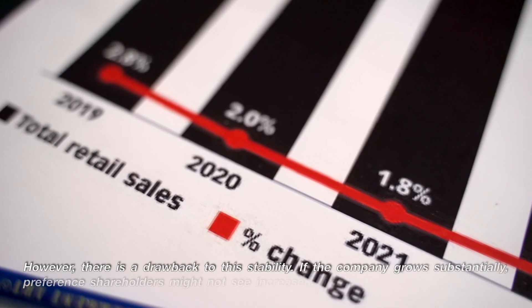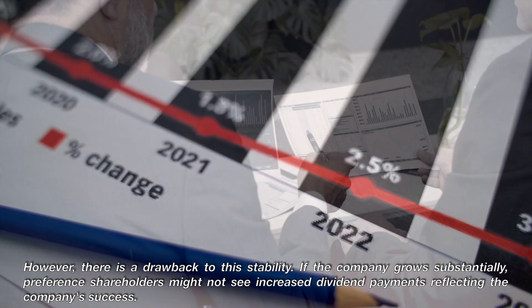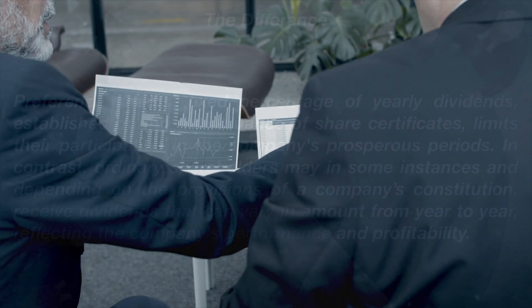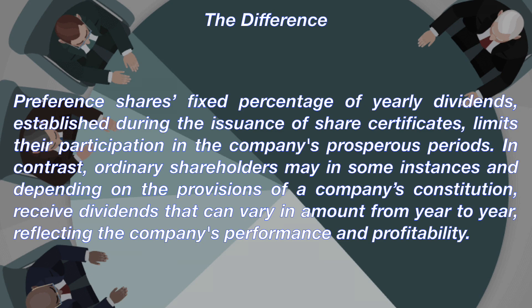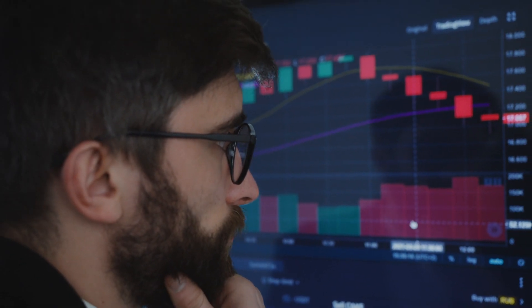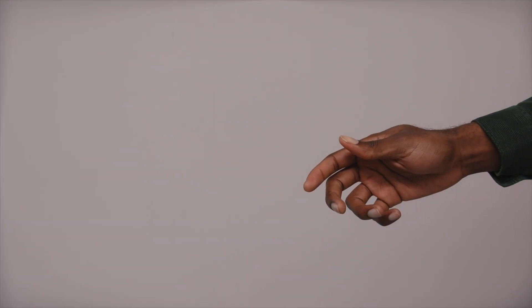Nevertheless, there is a downside to this stability. If a business experiences significant growth, preference shareholders may not benefit from increased dividend payments proportionate to the company's success. Their fixed percentage of yearly dividends, established during the issuance of share certificates or as stated in a company's constitution, limits their participation in the company's prosperous periods. In contrast, ordinary shareholders may, in some instances and depending on the provisions of a company's constitution, receive dividends that can vary in amount from year to year, reflecting the company's performance and profitability. Despite the potential for higher dividend payments during favorable business conditions, ordinary shares entail greater risk due to their lower priority status in dividend distribution and lack of preferential treatment in liquidation scenarios.